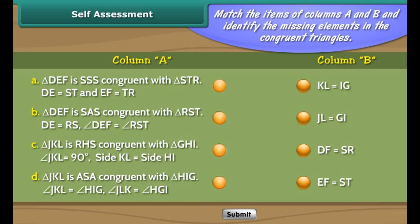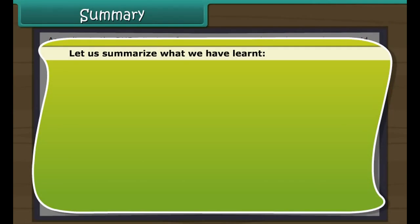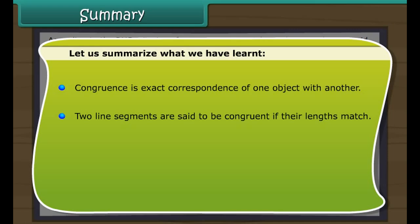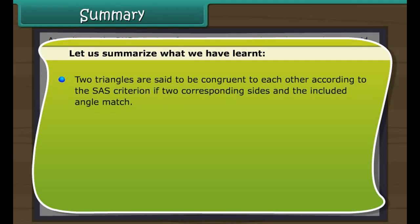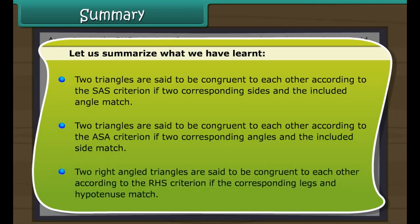Summary. Let us summarize what we have learned. Congruence is the exact correspondence of one object with another. Two line segments are congruent if their lengths match. Two angles are congruent if their measures match. Two triangles are congruent according to the SSS criterion if all three corresponding sides match. Two triangles are congruent according to the SAS criterion if two corresponding sides and the included angle match. Two triangles are congruent according to the ASA criterion if two corresponding angles and the included side match. Two right-angled triangles are congruent according to the RHS criterion if the corresponding leg and hypotenuse match.